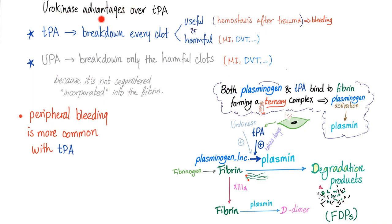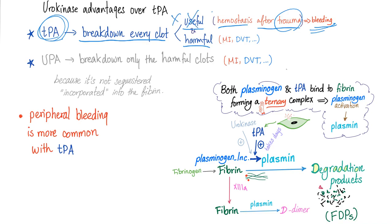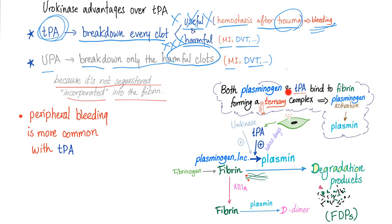Here's a pearl on urokinase advantages over TPA. TPA breaks down every single clot in your body — the useful and the harmful: the good, such as hemostasis after trauma where you need a clot; and the bad, such as MI and DVT. UPA is somewhat better — it breaks down only the harmful clots like MI and DVT. UPA is not incorporated into the fibrin; remember the ternary complex is plasminogen, TPA, and fibrin — TPA, not UPA. But don't forget, alteplase will still outperform urokinase overall.